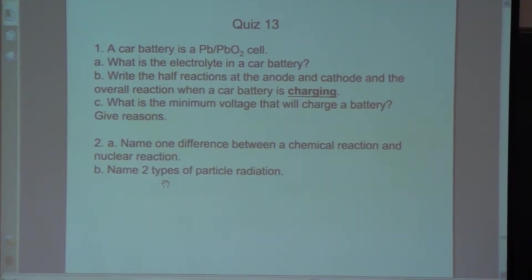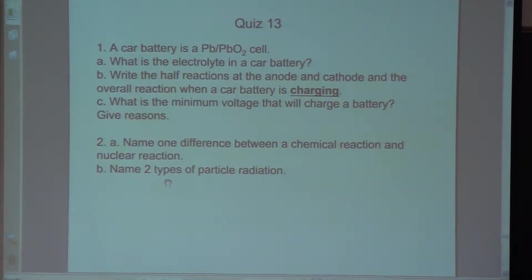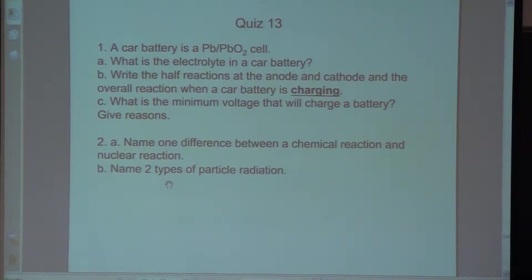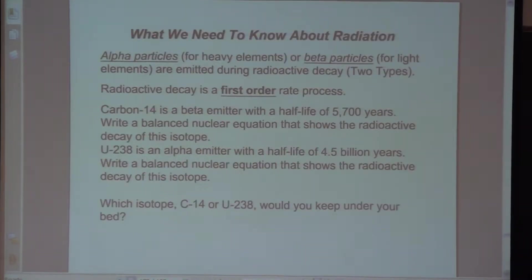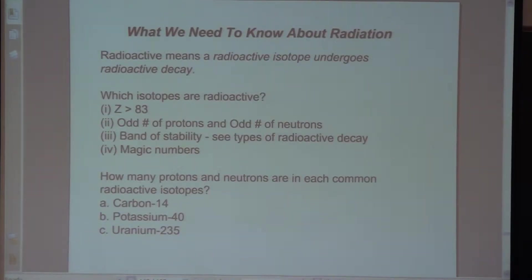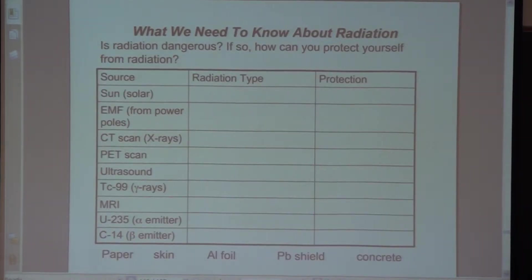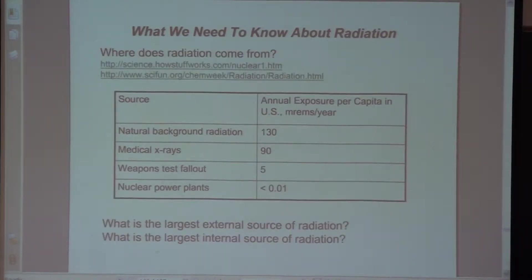Now name two types of particle radiation. There are two types of radiation — one type is particle, the other is electromagnetic radiation, which we talked about in Chem 1A. Can you name two types of particle radiation? Alpha particles and beta particles. Let's talk about this question. Let me go back to this slide here.